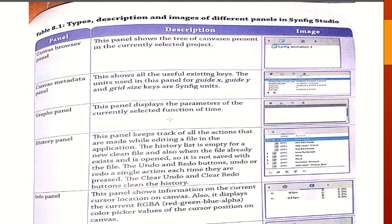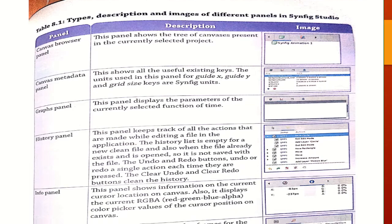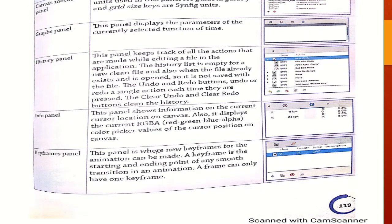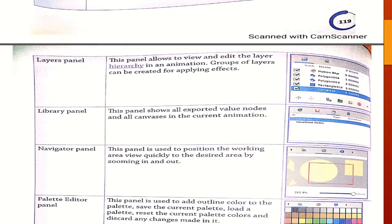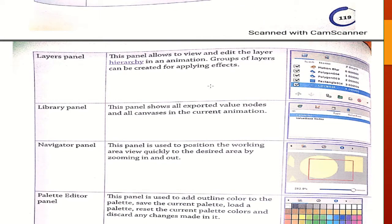The graphs panel displays the parameter of the currently selected function of time. In the history panel, you can see the history of actions performed, such as undo and redo options. The info panel is used for the information of the current cursor location on canvas and also displays the current RGBA or color picker value of the cursor position. The keyframe panel is used for animation keyframes — a keyframe is the starting and ending point of any smooth transition in an animation. In the layer panel, you can view or edit the layer hierarchy in the animation. In the library panel, you can see all value nodes or canvases in the current animation — all working data is available in the library panel.